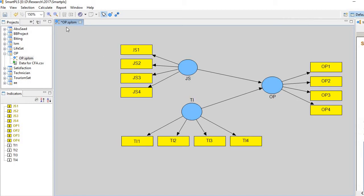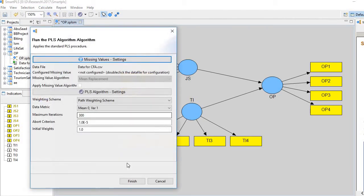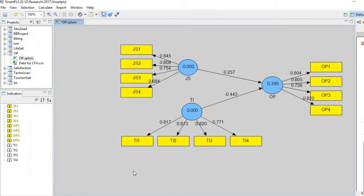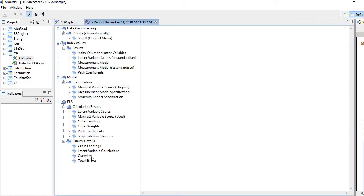So first what we do is we run PLS algorithm and go to the report and overview. Here we find R-square is 0.3903.